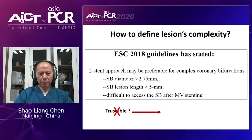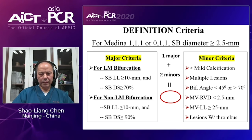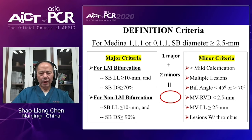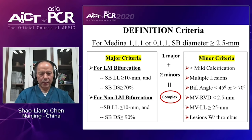According to the definition criteria, one major criteria plus any two minor criteria defines the lesion as a complex coronary bifurcation. This table shows the diagnostic value of this definition: relying on major criteria alone, both sensitivity and specificity were higher than 70%. With one major criteria plus any two minor criteria, the diagnostic value increased up to 80%. These criteria were built from a large database but had never been tested in any clinical trial.